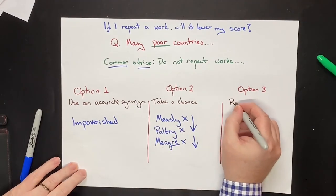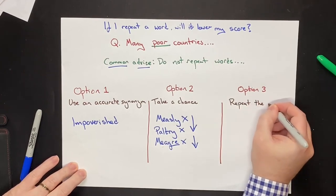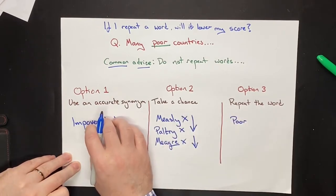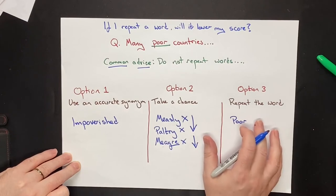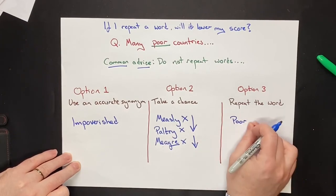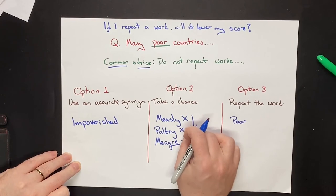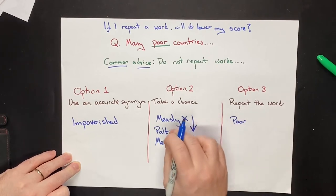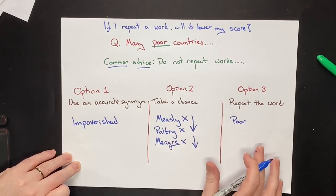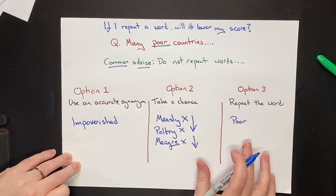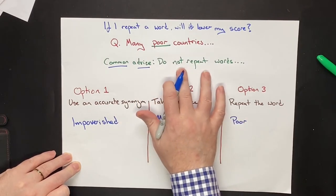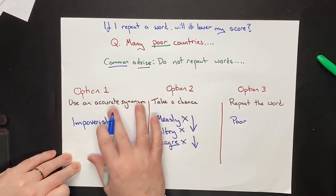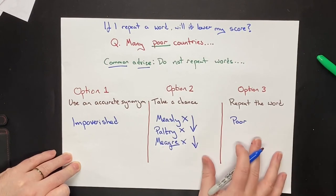Option three is repeat the word. So use the word poor. Option one is the best option, but if you have a choice between repeating the word and using something that you're not sure about, it is much better to repeat the word than it is to use something that is wrong. If you disagree with me, then you are blindly following what people tell you, because you believe that they're experts, rather than understanding logic and common sense.